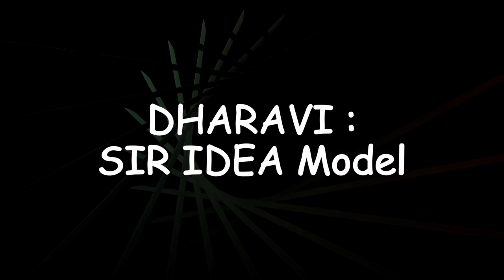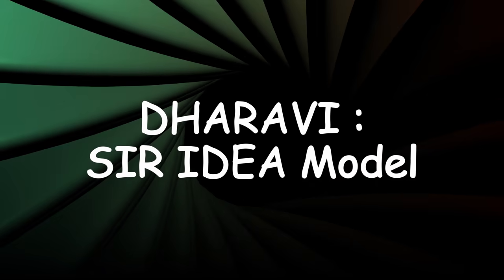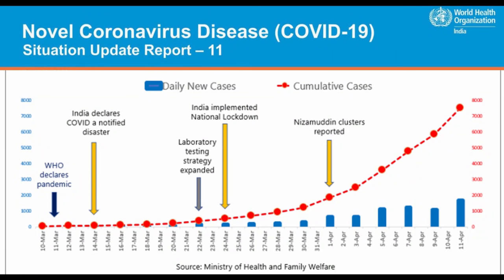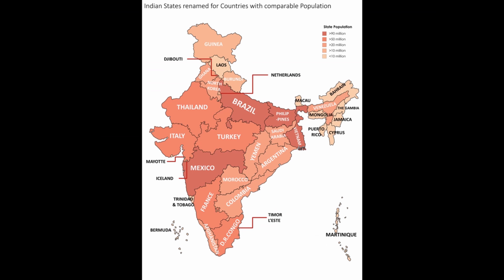Timely government effort has dampened the infection graph of COVID-19, shows WHO's situation report. But in a country with a population like India, lockdown has resulted in a huge problem for the poor.